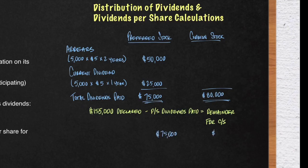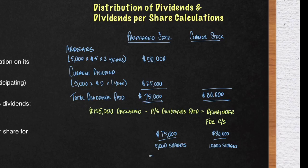Let's calculate dividends per share. You take the $75,000 of dividends paid to the preferred stock and divide it by the number of shares. You do the same with the common stock — what they're given in dividends divided by the number of shares. For preferred stock, we have $15 per share, and for common stock, we have $8 per share. This is important for valuing each class of stock.